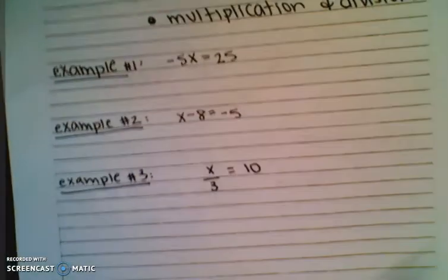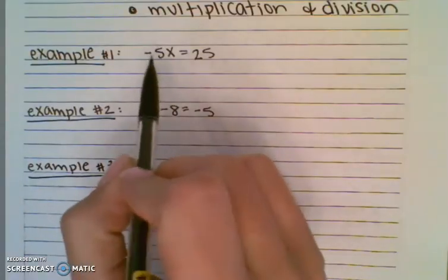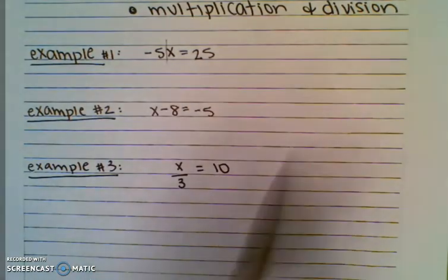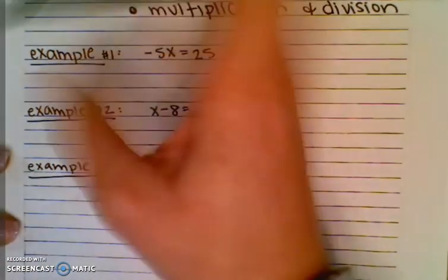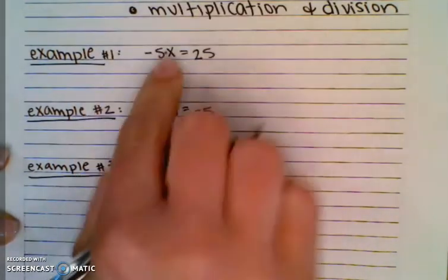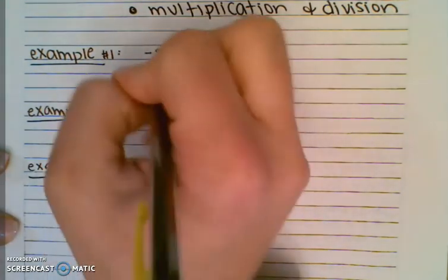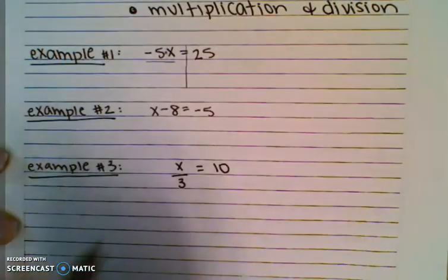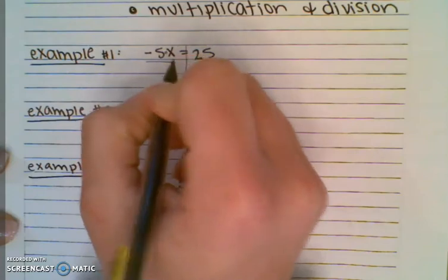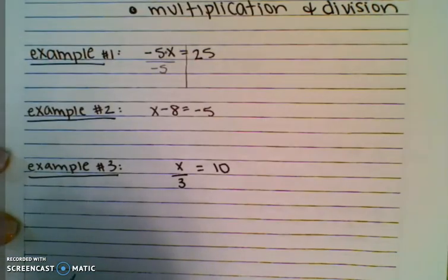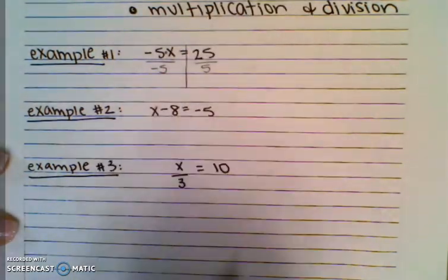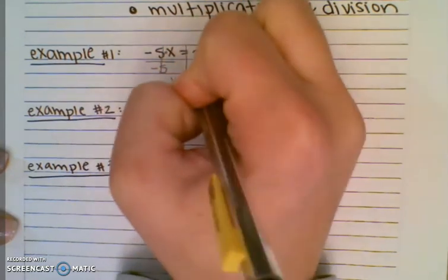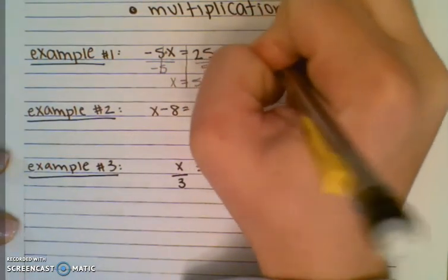For example one, remember the negative 5 and the x — there's no symbol between the two, so that means they're multiplied. I'm going to put a little dot for multiplication. The opposite of multiplication is division, and this whole negative 5 is what we're trying to get rid of. So I'm going to divide by negative 5 on the left, and if I divide by negative 5 on the left, I have to also divide by negative 5 on the right. So x is going to equal 5.